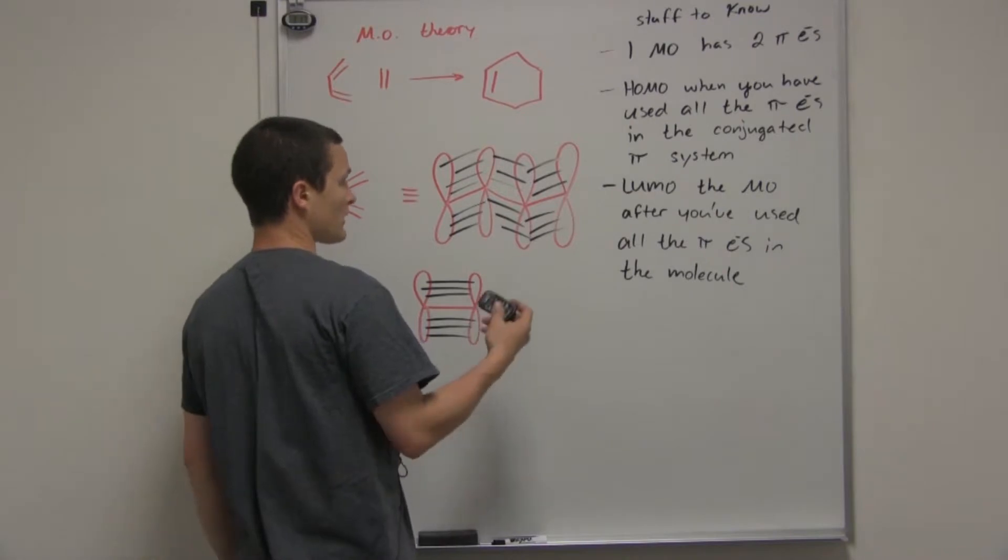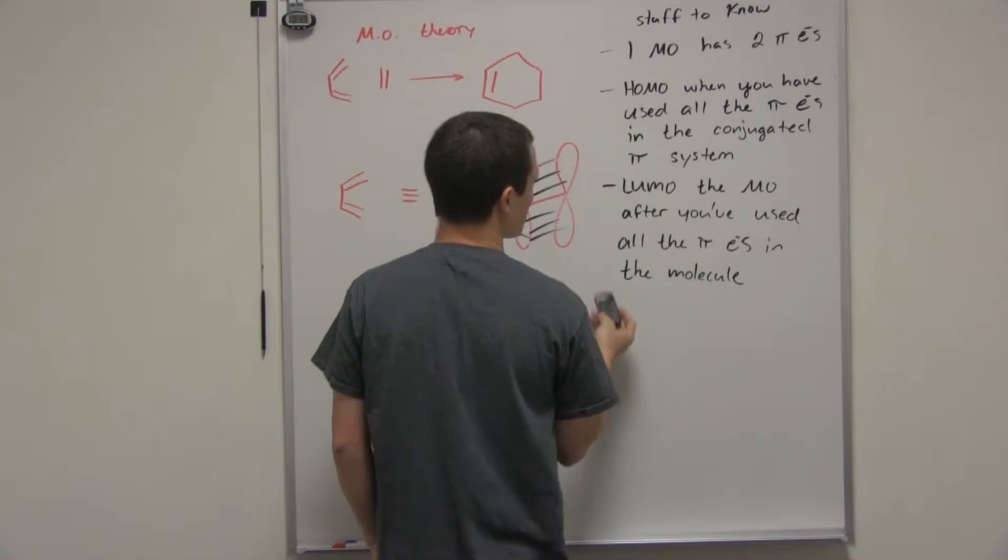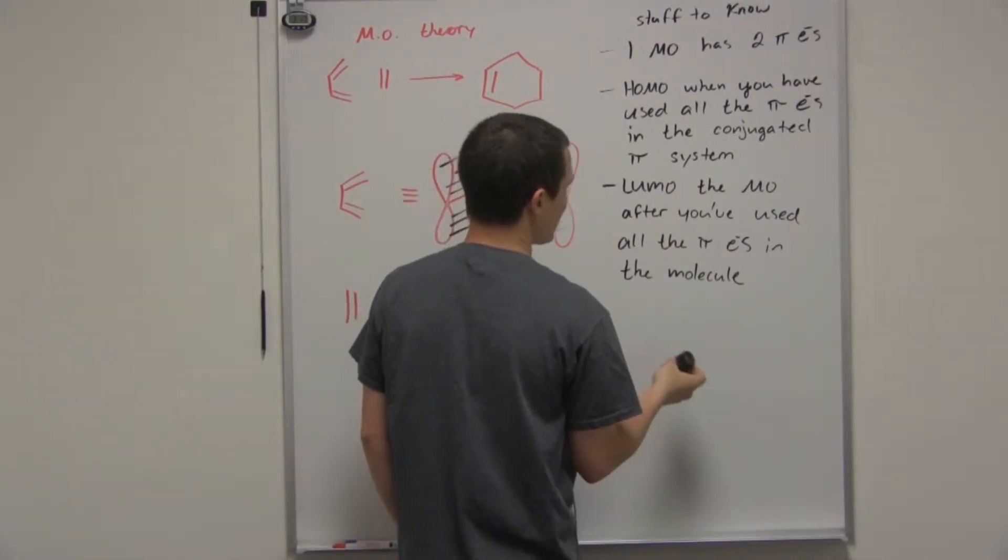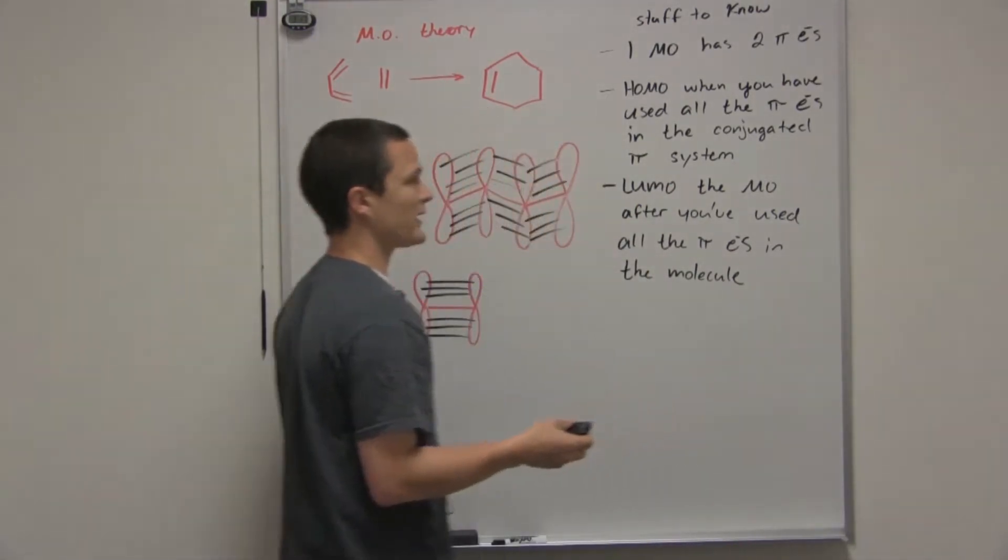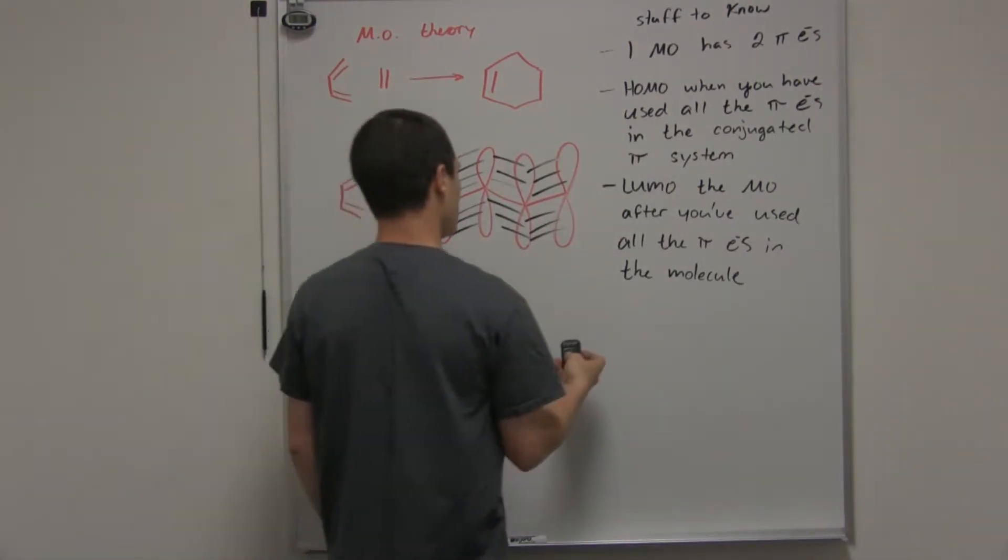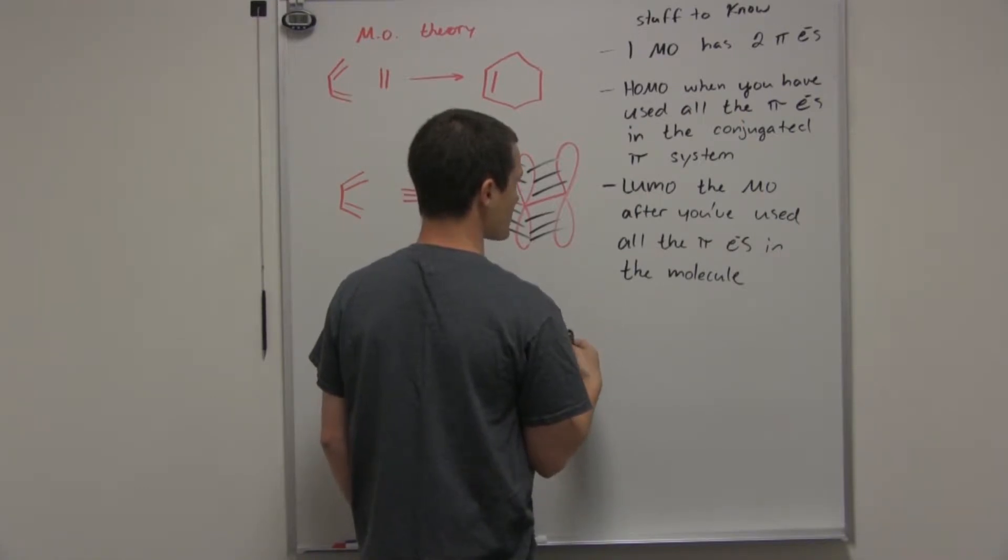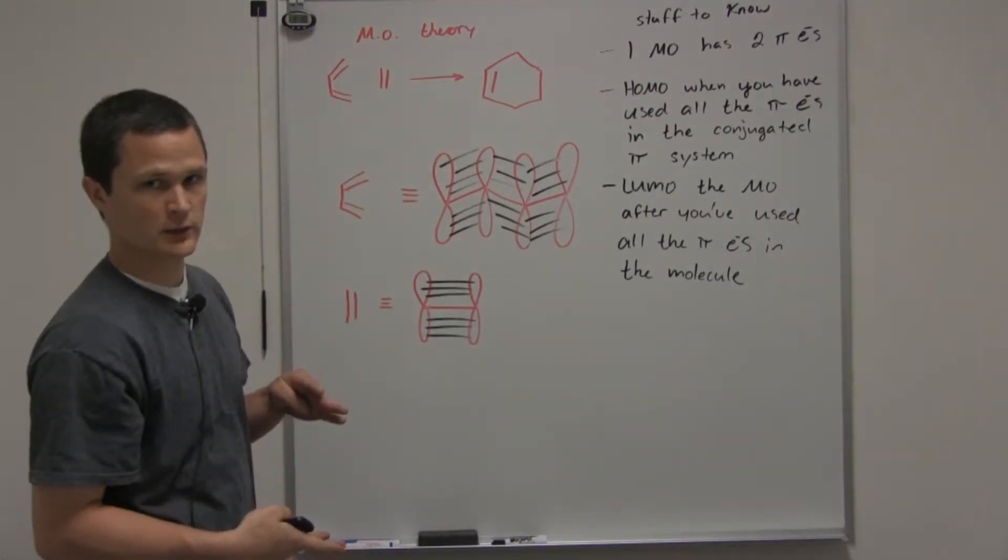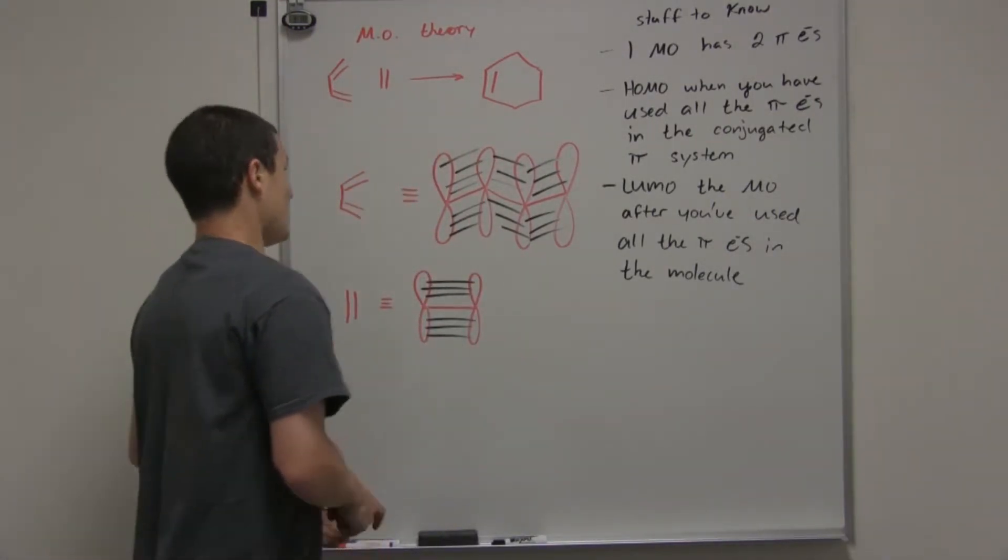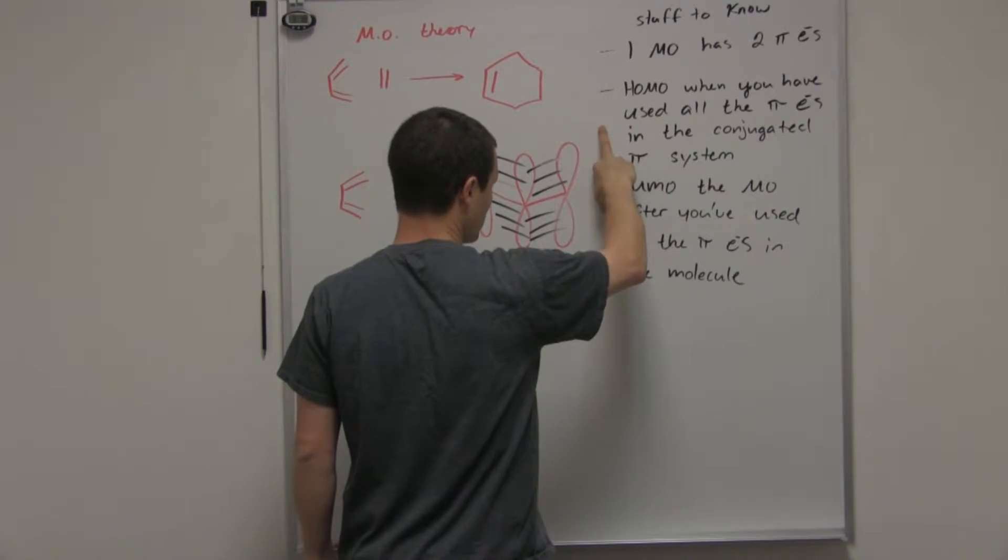The next two things: we've already mentioned what HOMOs and LUMOs are. The HOMO is the highest occupied molecular orbital. You know that you have the HOMO when you've used up all of your pi electrons when you're looking at the molecular orbitals. The LUMO is the next orbital above the HOMO. It's the lowest unoccupied molecular orbital. In other words, it's the next orbital available for bonding to occur. And these two things have to be in phase for the molecule to react and to form a new bond.